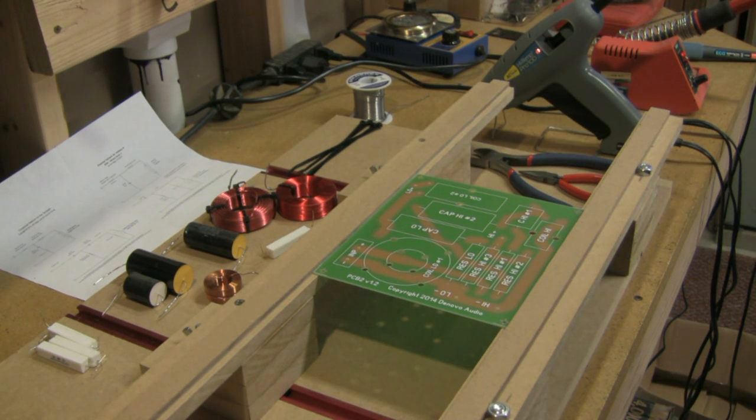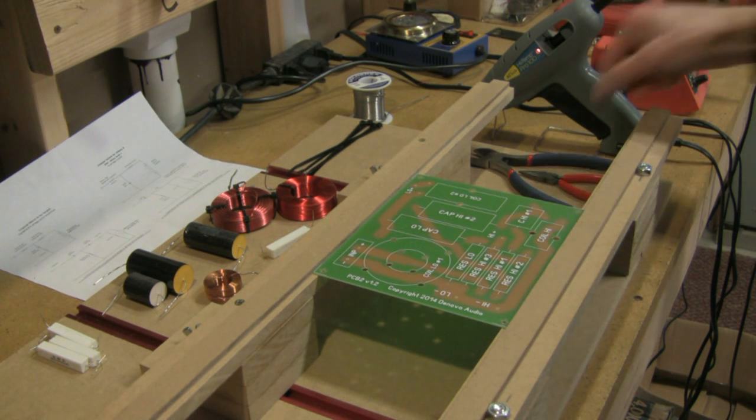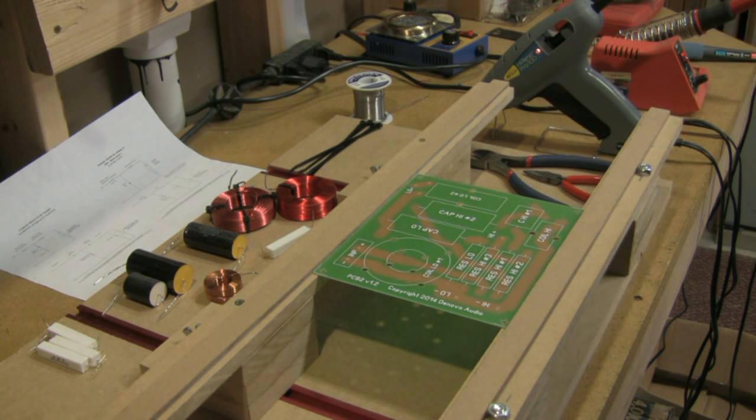To assemble your crossover board you want to make sure you have a few things. First, all the parts you need for your kit, a few zip ties to hold the larger items like the inductors down to the board, a pair of pliers and cutter, and of course the soldering iron and solder. You'll also want adhesive to hold some of the parts down to the board. I'm using hot glue because it's quick and easy.